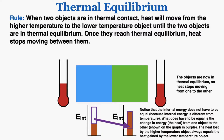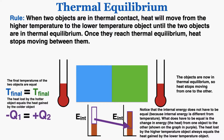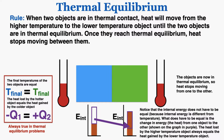You'll notice that the internal energy does not have to be equal, because internal energy is different from temperature. What does have to be equal is the change in energy — the heat — from one object to the other. The heat lost by the higher temperature object must always equal the heat gained by the lower temperature object. So when two objects are placed in thermal contact, heat flows from higher to lower temperature until thermal equilibrium is reached, and any heat lost by the hotter object is gained by the colder object because energy is conserved. The final temperatures are equal, and the heat lost equals the heat gained.